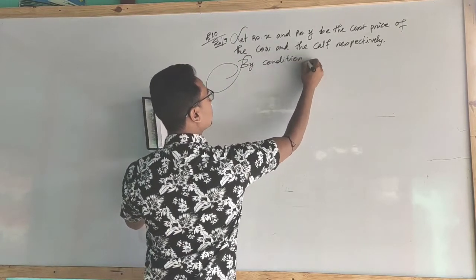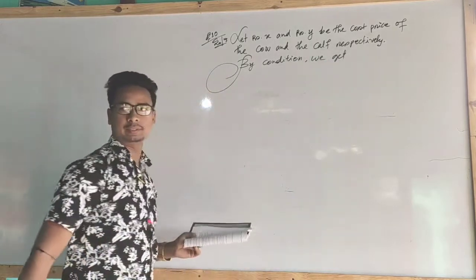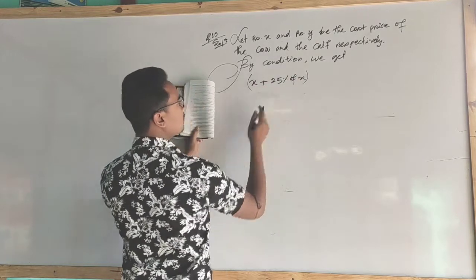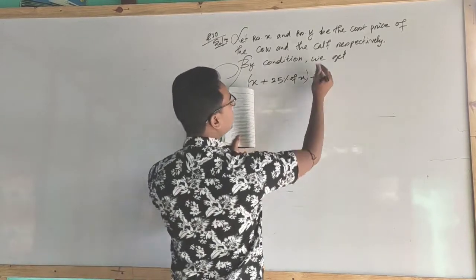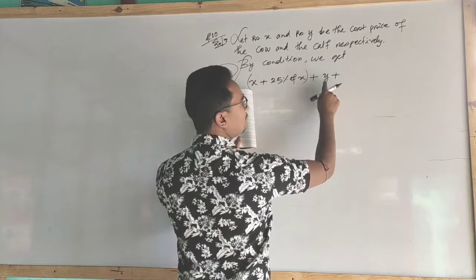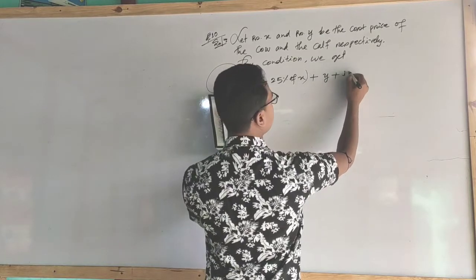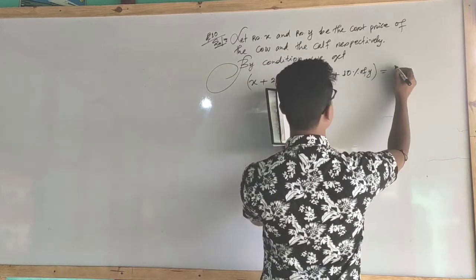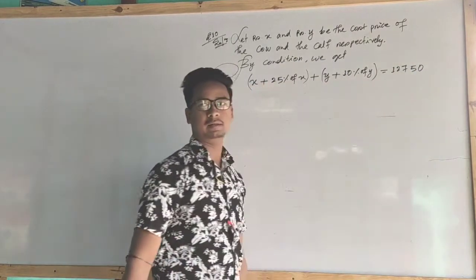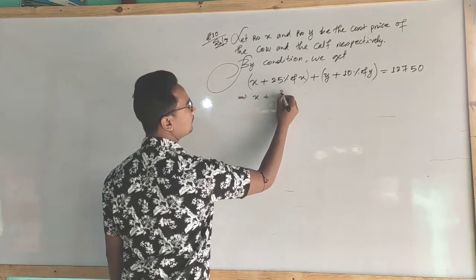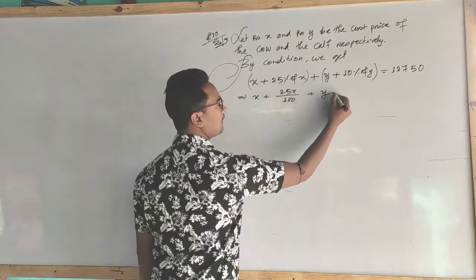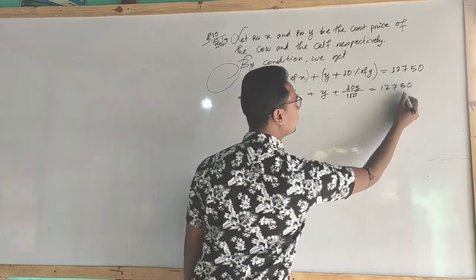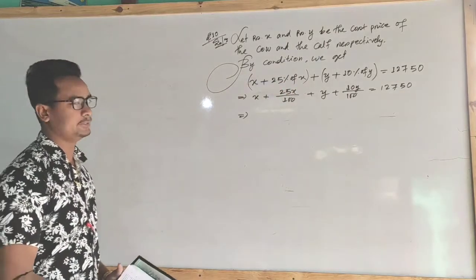Then by condition we get: cost price plus profit 25% of X on the cow plus cost price plus 10% of Y on the calf equals 12,750. So x plus 25x upon 100 plus y plus 10y by 100 equals 12,750.